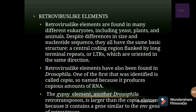Retrovirus-like elements are found in many different eukaryotes, including yeast, plants, and animals. Despite differences in size and nucleotide sequence, they all have the same basic structure — a long coding region flanked by long terminal repeats (LTRs) oriented in the same direction, from 5' to 3'. Retrovirus-like elements have also been found in Drosophila. One of the first identified is called Copia, so named because it produces copious amounts of RNA.